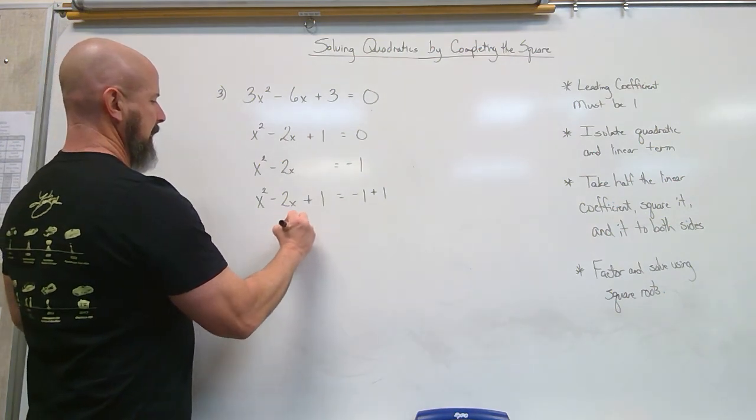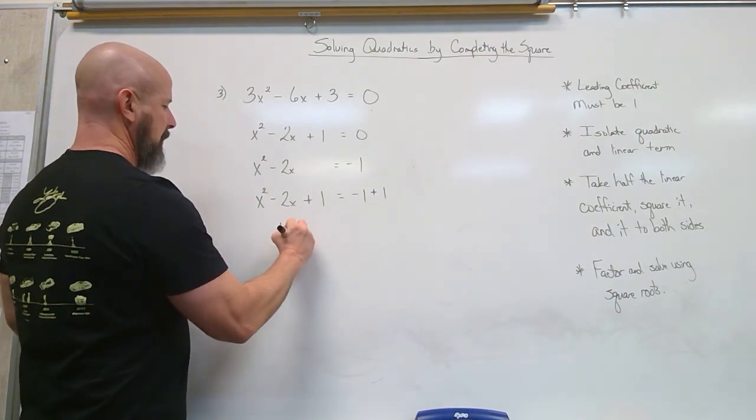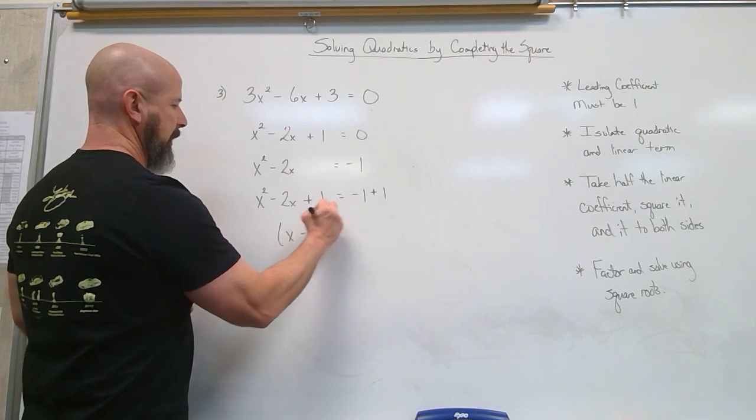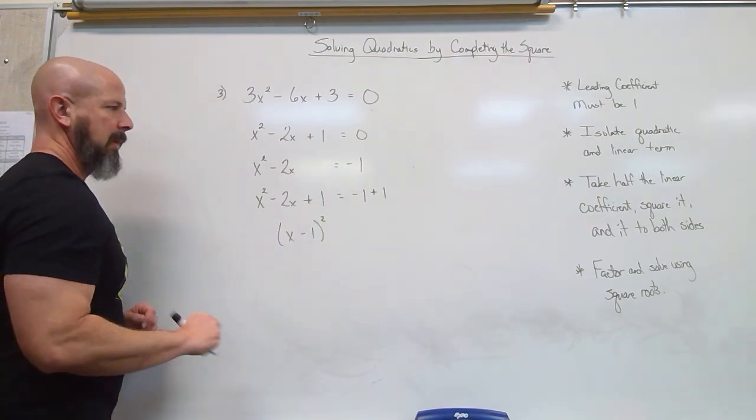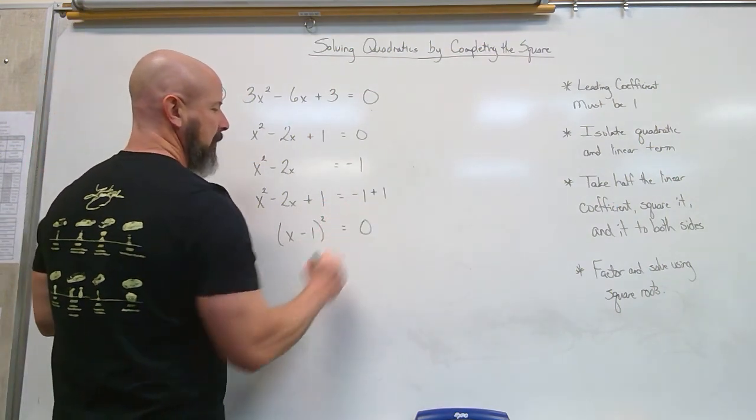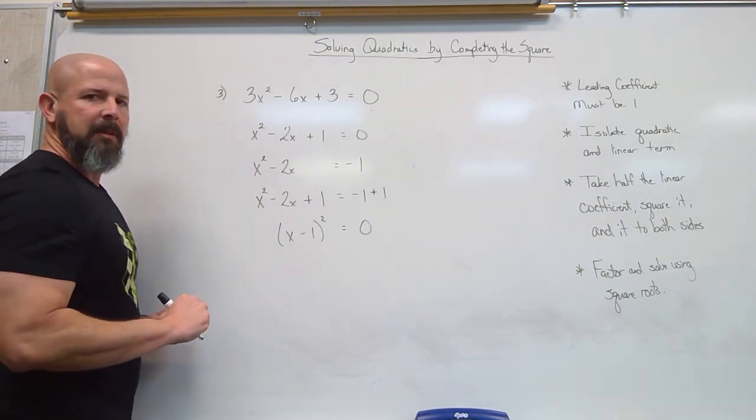Factor x minus 1 squared equals negative 1 plus 1 is 0. Makes it a little bit nicer.